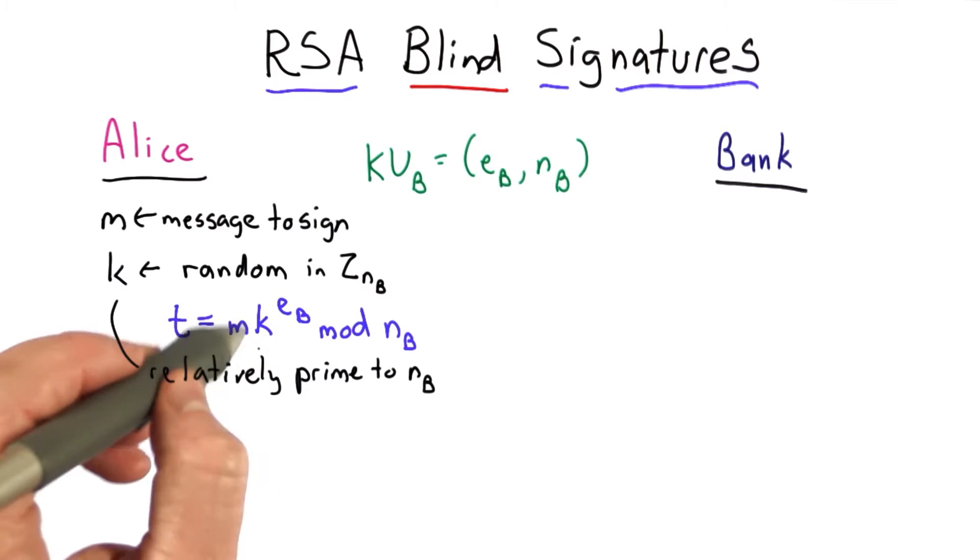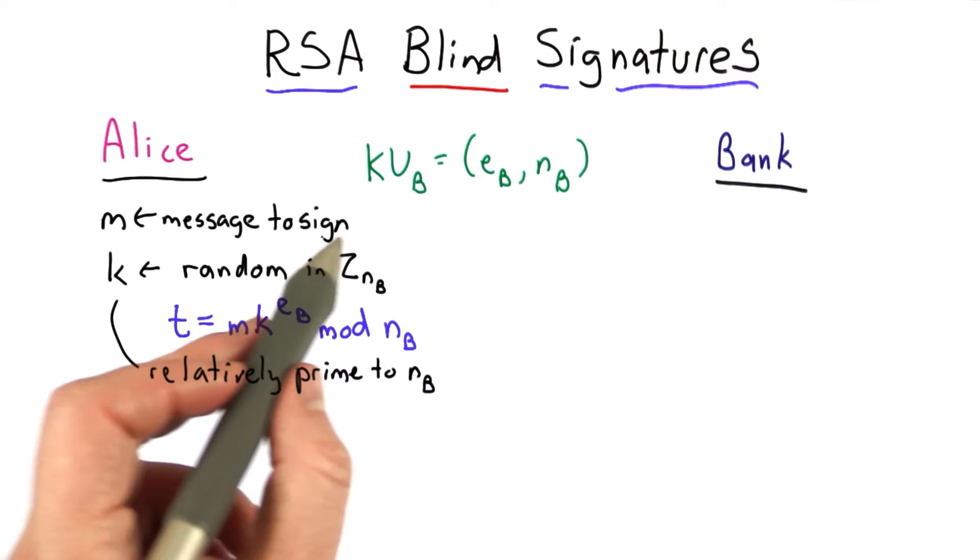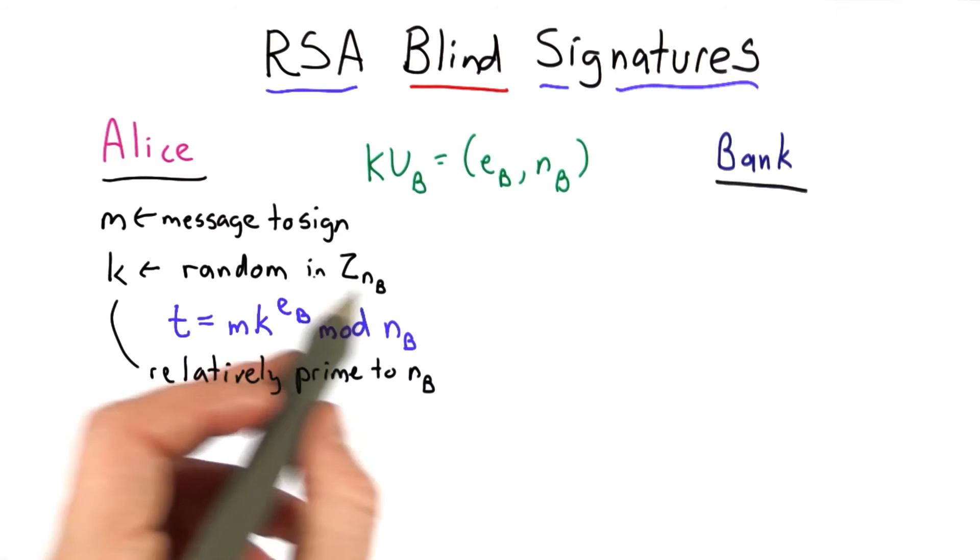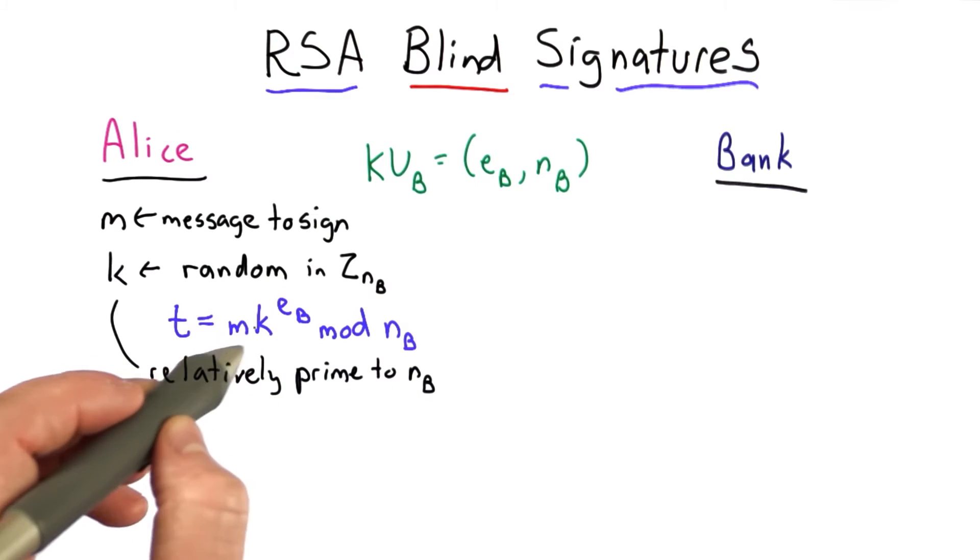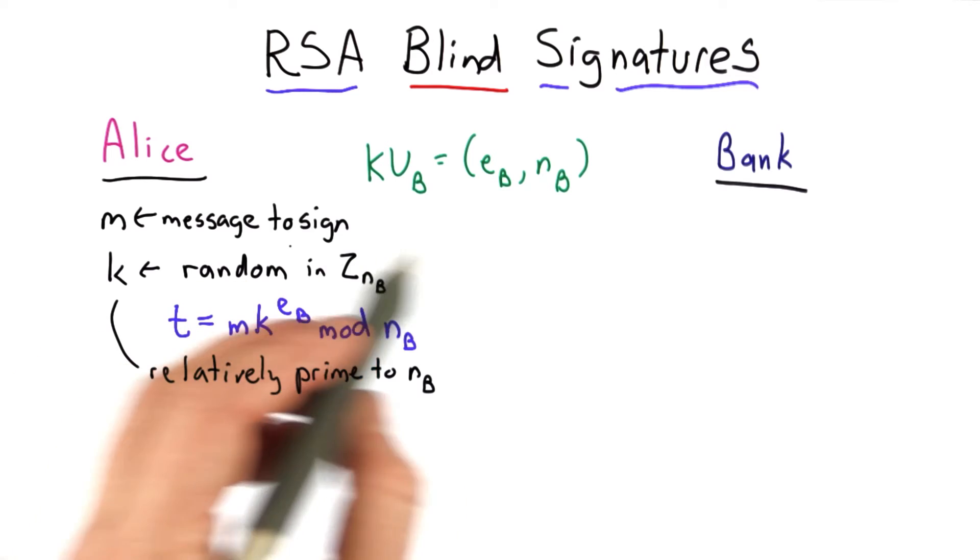well, that would make k to the eb mod nb a permutation of the values in zb. So that means that this is also random in that range, and so m multiplied by this is random.